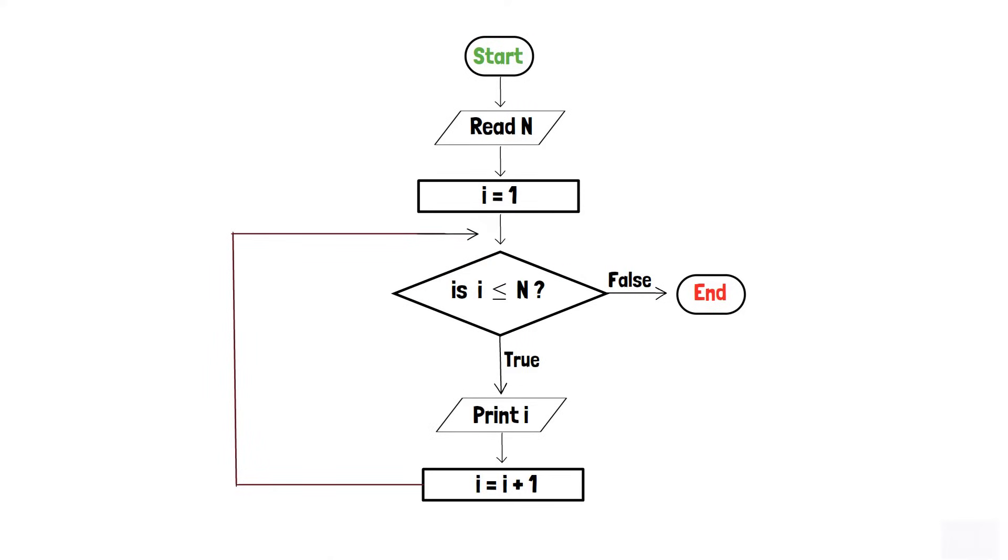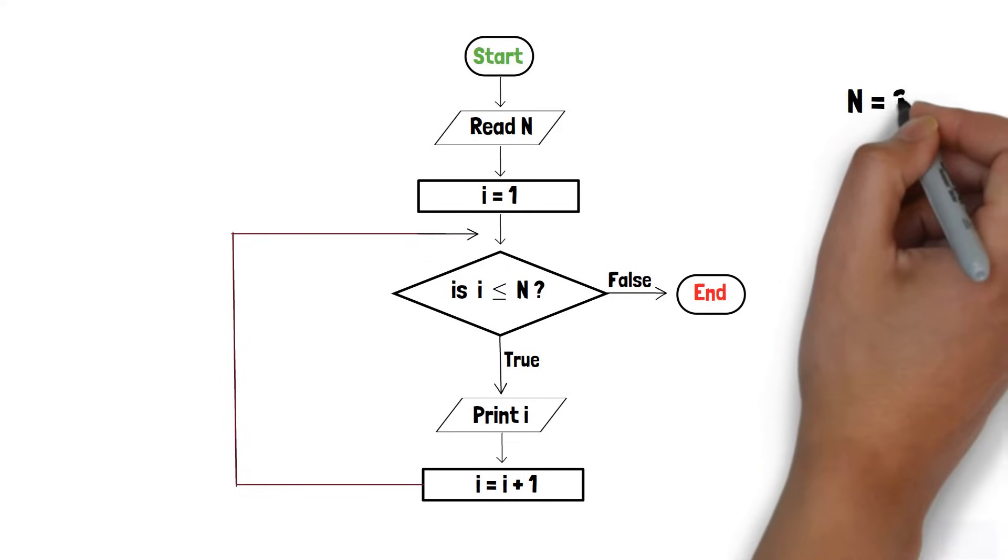Thus, whenever the value of i is less than n, the value of i gets printed and when it exceeds, the program gets terminated. To understand the flowchart in a better way, let's try run the program by considering the value of n as 3.